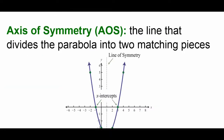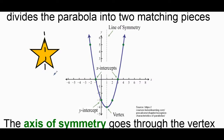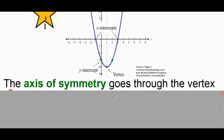Another nice feature of parabolas is what's called the axis of symmetry — sometimes called the line of symmetry, or AOS. The axis of symmetry is a line that divides the parabola into two matching pieces. Think back to elementary school: you'd have a star and draw a line so that if you folded it on top of itself, both sides would match. The same is true for parabolas — we can cut them down the middle, right through the vertex, and fold them on top of themselves. The axis of symmetry always goes through the vertex.